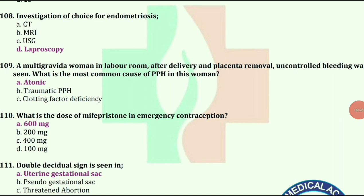A multigravida woman in labour — after delivery and placenta removal, uncontrolled bleeding was seen. What is the most common cause of PPH in this woman? The answer is atonic.